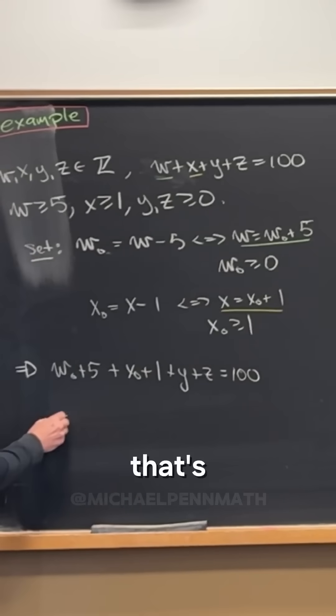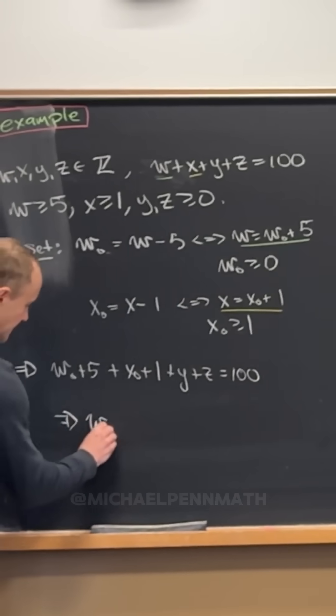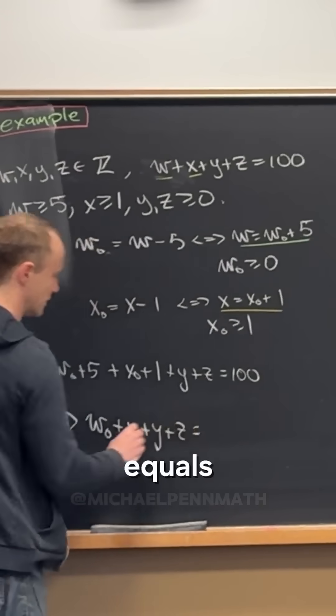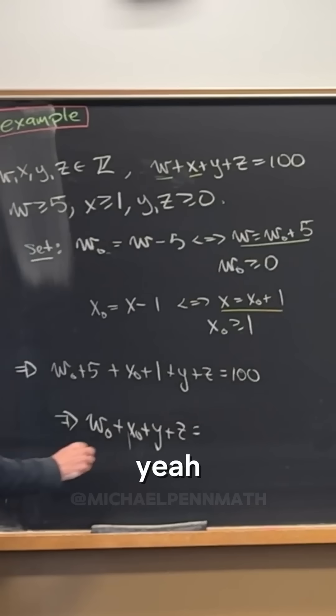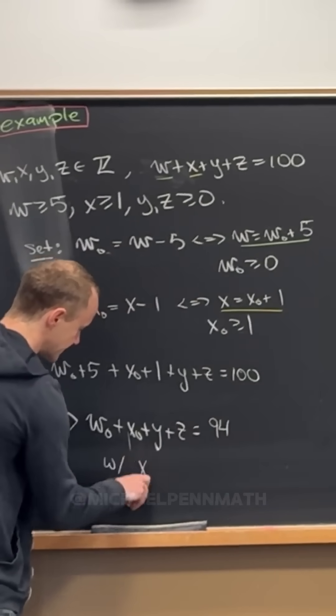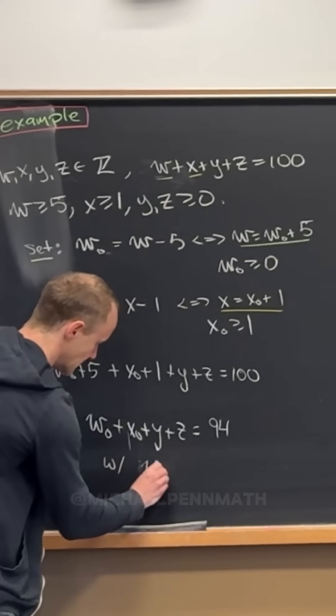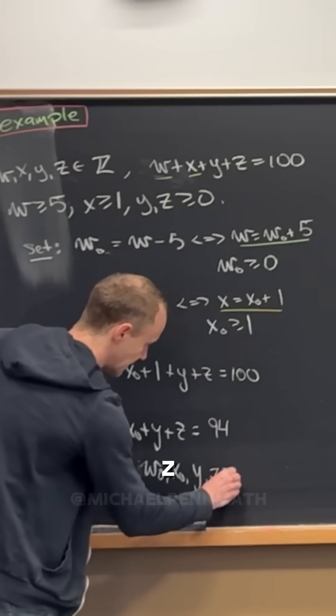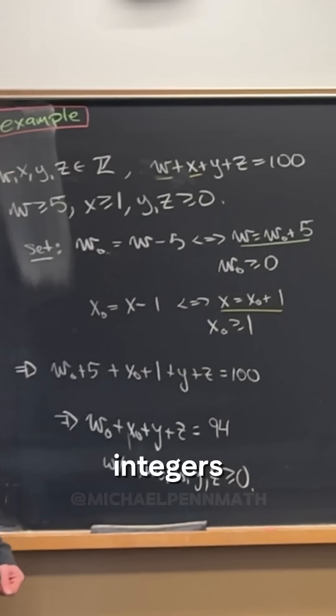But that's the same as solving w naught plus x naught plus y plus z equals 94. Yeah, 94 with all variables w naught, x naught, y, z non-negative integers.